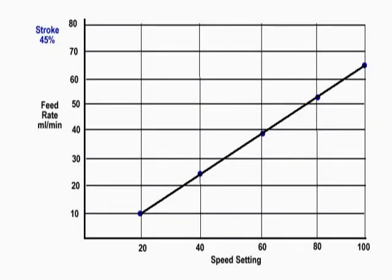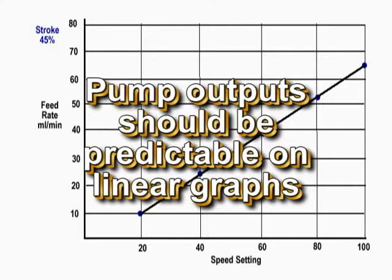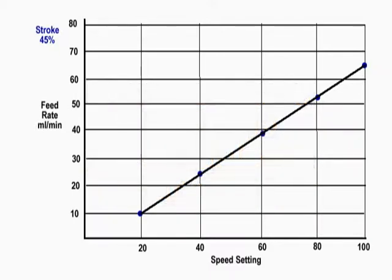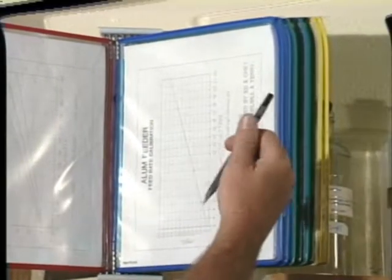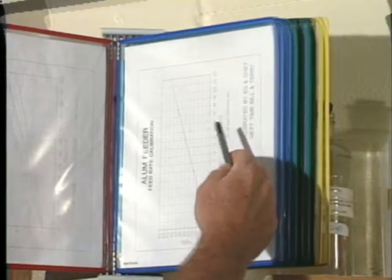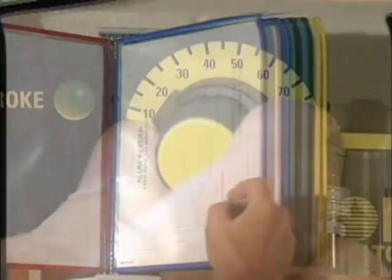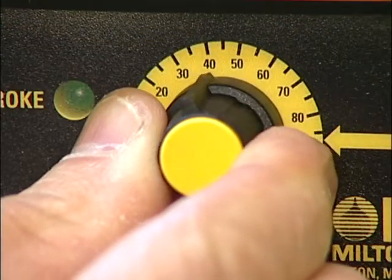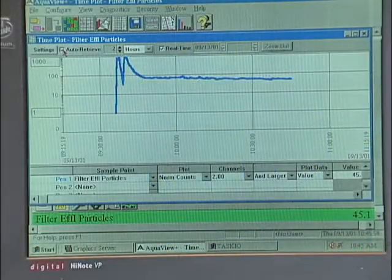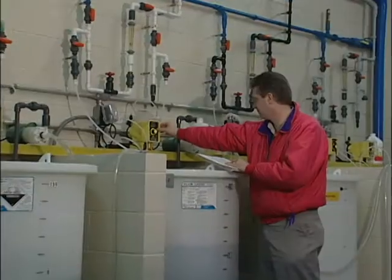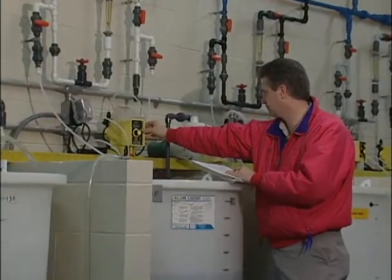Operators should be able to predict reasonably well what the delivery will be at settings within the ranges established by the graph. This information should be kept near the pump in a waterproof container so it can be easily referenced when adjustments are required. Coupling this information with historical records from past events will enable the operator to make accurate adjustments of chemical feeds in response to changing water quality characteristics.